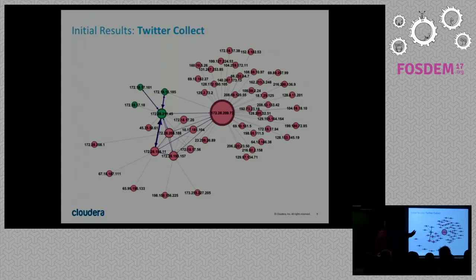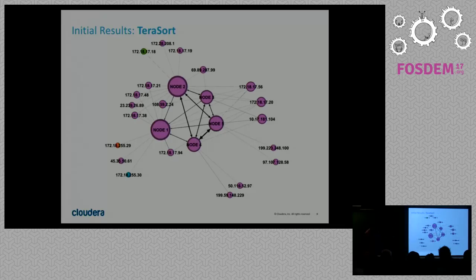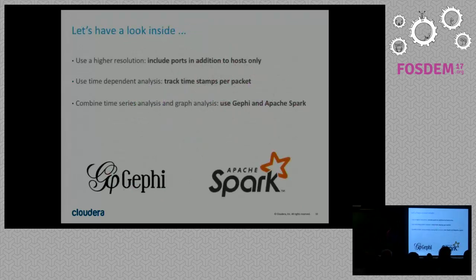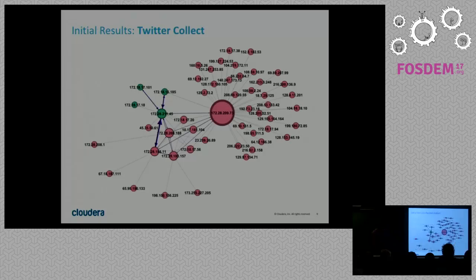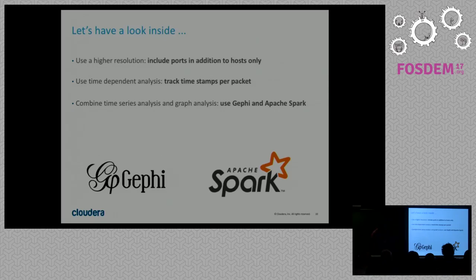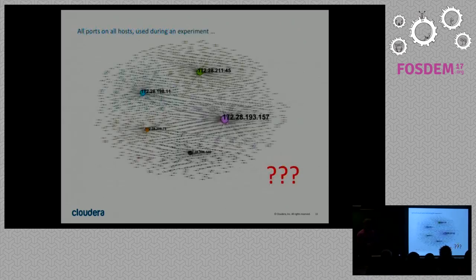Not much yet. There's a central node because one node speaks to the outside world for data ingestion, and we have an internal operation running on five nodes in parallel. We have to look deeper and increase the resolution. We add port information, not only host information. We also add timestamps and track the time-dependent graph — not as a snapshot of the whole period but in little time slices, making it dynamic. This allows us to connect to the time domain, switching between graph analytics and time series analytics, and Gephi will be our friend here.